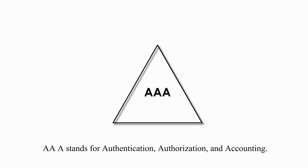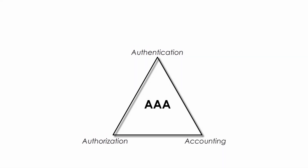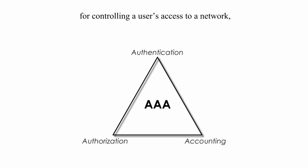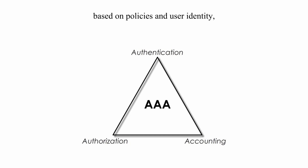AAA stands for Authentication, Authorization, and Accounting. It is a fundamental security framework for controlling a user's access to a network, determining access levels or users' privileges based on policies and user identity, and keeping track of the user's activities.